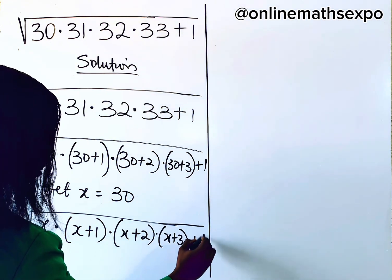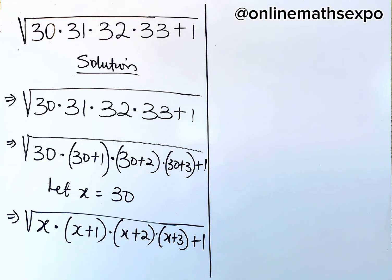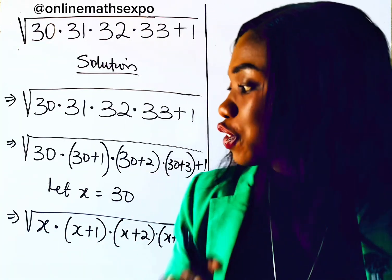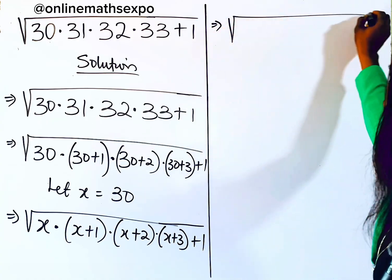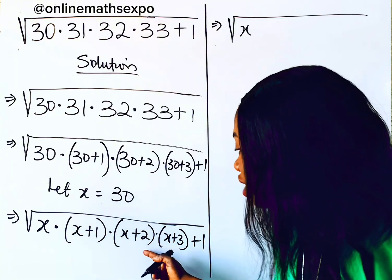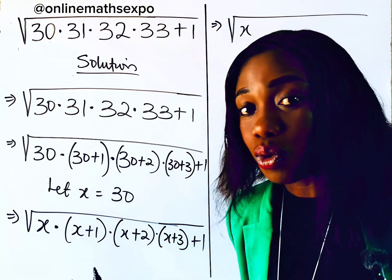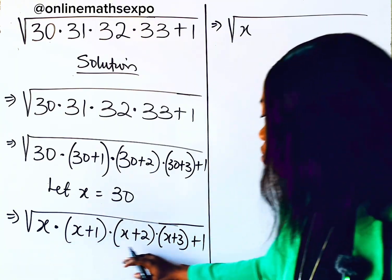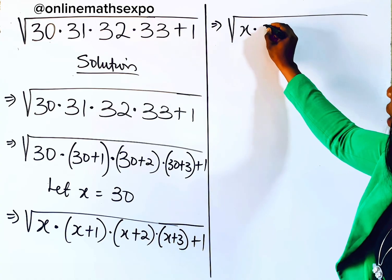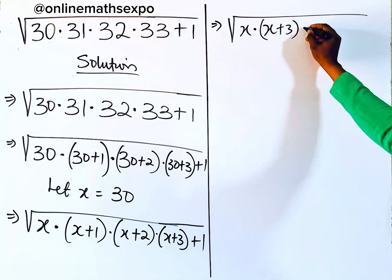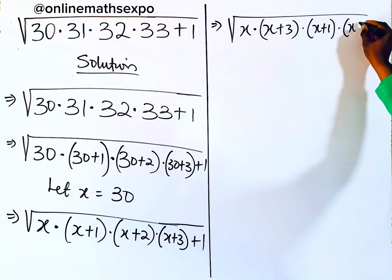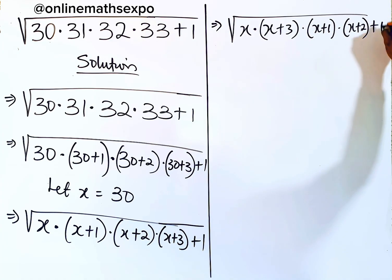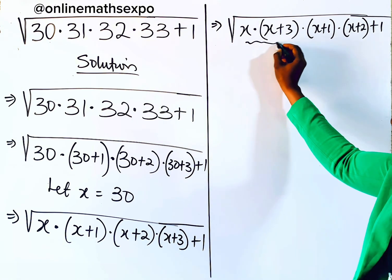Now we keep simplifying. We rearrange this to suit what we want to do. This can be written as: square root of x(x + 3) multiplied by (x + 1)(x + 2), then add 1. What do you think we should do next?